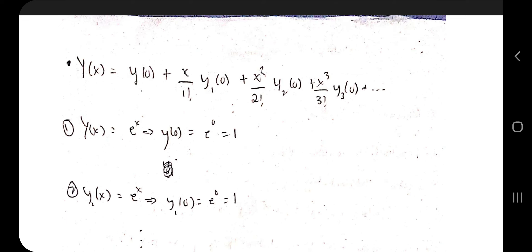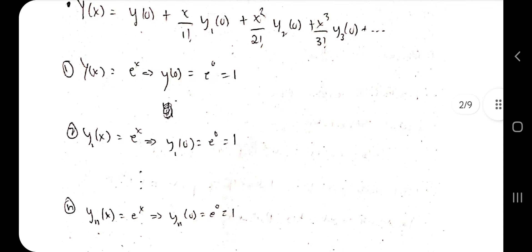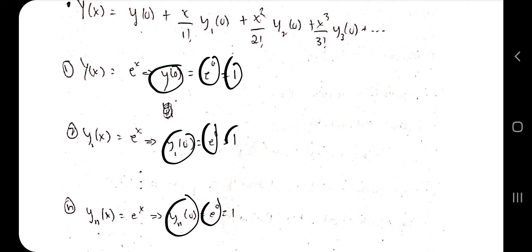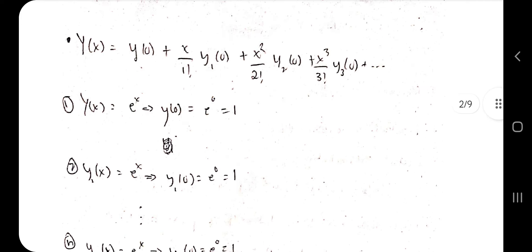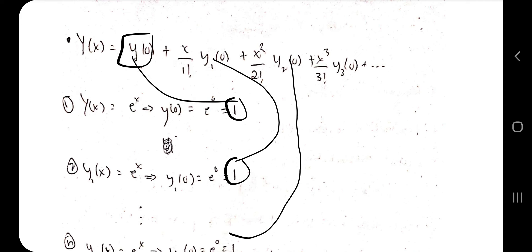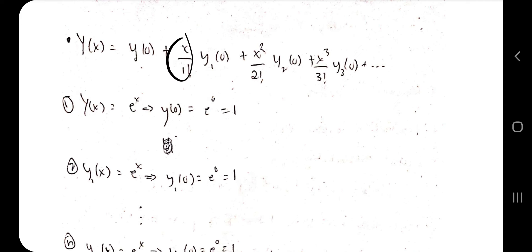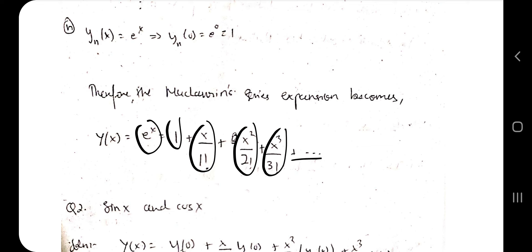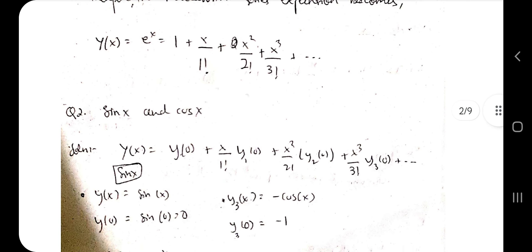Next we find y₁(0). We differentiate e^x, which gives e^x — the same each time. So y₁(0), y₂(0), y₃(0) and all higher derivatives evaluated at 0 are all equal to e^0 = 1. Substituting all values into the formula, we get the final answer: e^x = 1 + x/1! + x²/2! + x³/3! + ...